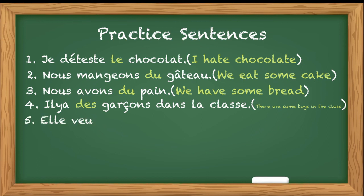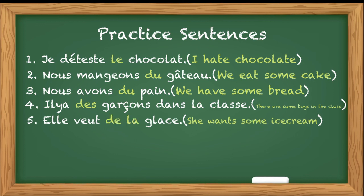Next is: Elle veut - dash - glace. She wants some ice cream, or will you write she wants the ice cream? No, definite article will not come. We will use elle veut de la glace. She wants some ice cream.